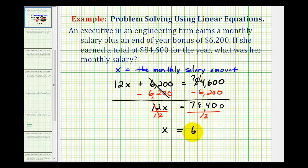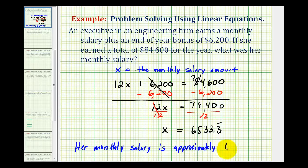So let's go ahead and write this down, and then we'll round it to the nearest penny. Our monthly salary is approximately $6,533.33. Round it to the nearest penny. I hope you found this helpful.